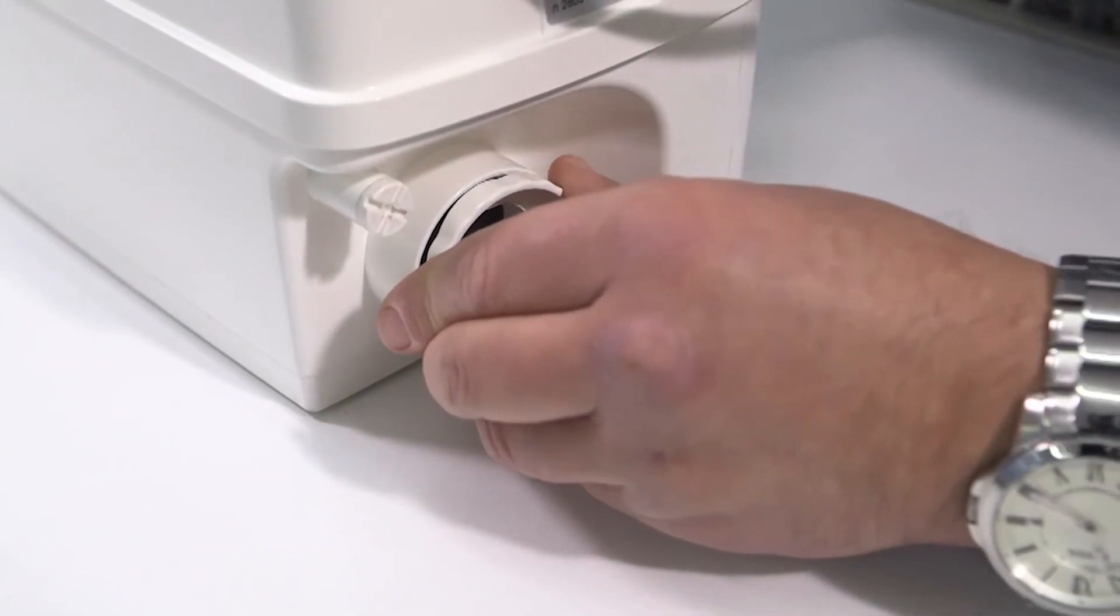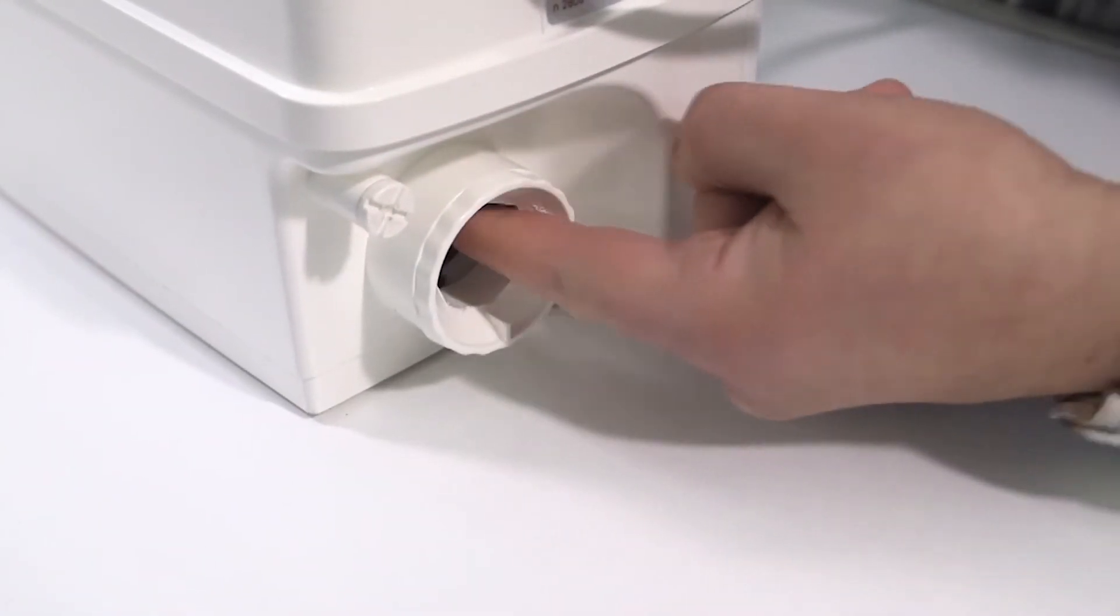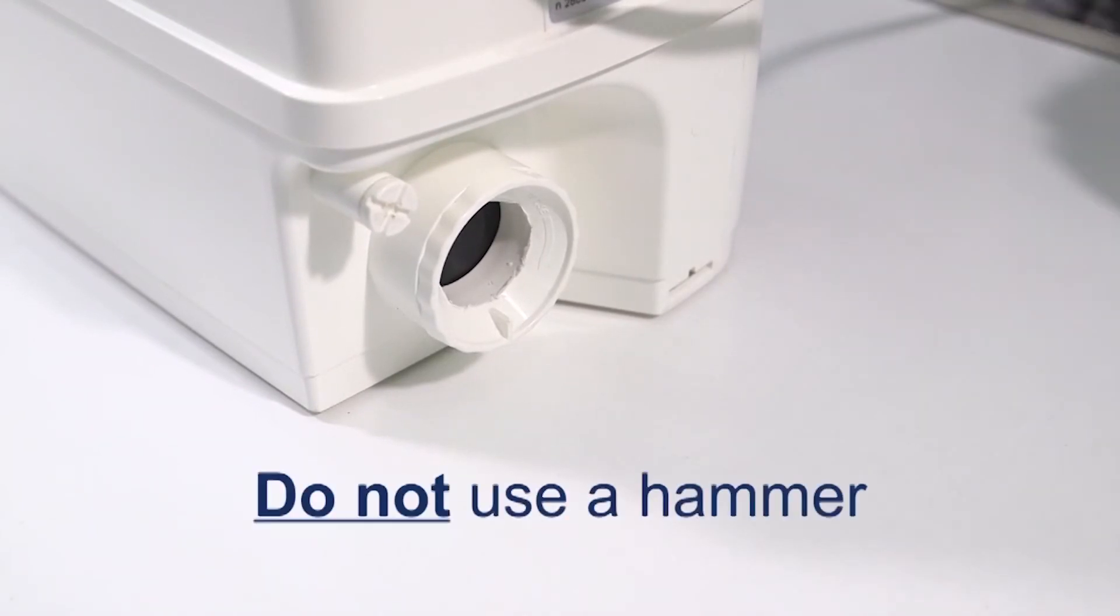With the cutout complete, refit the cap and check the operation of the non-return valve. Under no circumstances use a hammer to cut out the blank, otherwise you may damage the non-return valve.